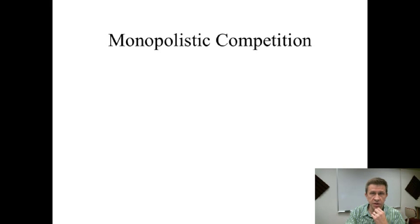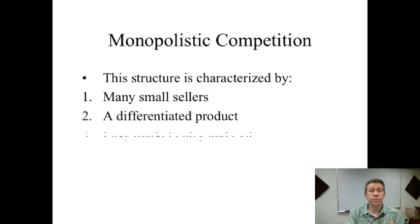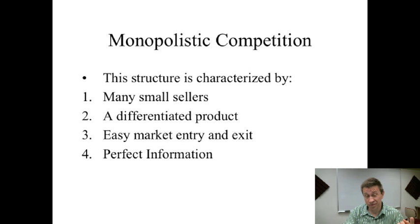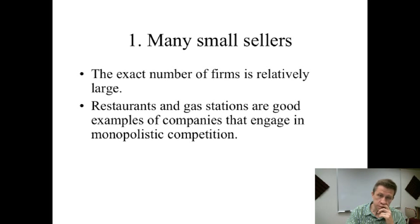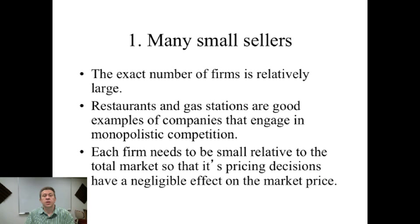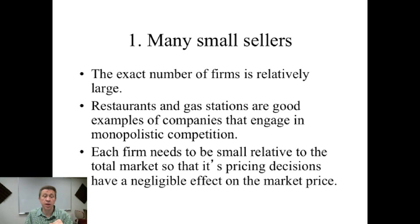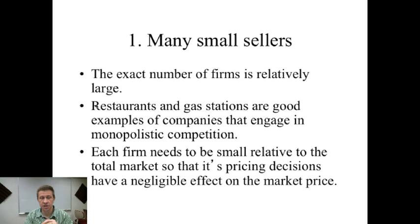First we're going to cover monopolistic competition. The assumptions are: many small sellers, differentiated product, easy market entry and exit, and perfect information. For the many small sellers assumption, we've covered this in perfect competition. A large number of sellers means each firm is so small it doesn't affect others' pricing decisions. Fast food restaurants, and restaurants in general, and gas stations are pretty good examples of monopolistically competitive companies.